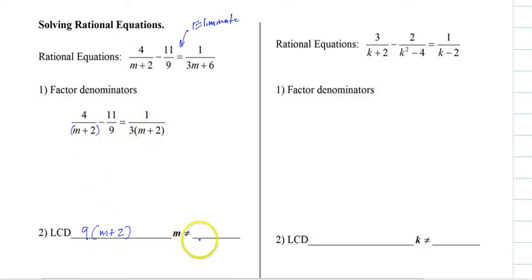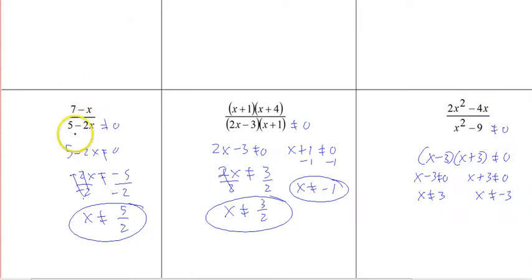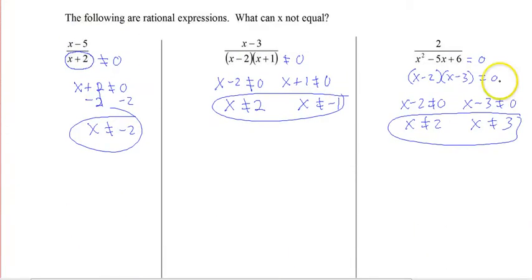The next thing we have to do is put a restriction. So since these are denominators, we go back to our undefined value. Remember with this, denominators can never equal 0. So like here, x cannot equal negative 2, x cannot equal 2 or negative 1, and then 2 or 3.